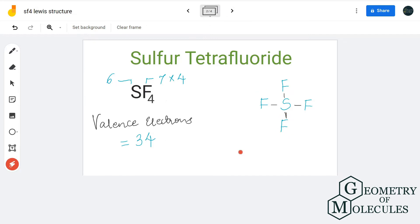Now let's show bonds between fluorine and sulfur. Each bond will take two valence electrons. In total, eight valence electrons will be used up out of 34.